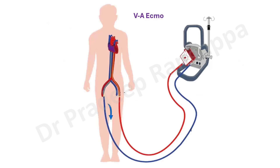For all our ICU trainees and DRNB trainees, it's good to have clarity on this. When we talk about VA ECMO, blood is drawn from the venous circulation, passed through the ECMO pump, and returned retrograde through the femoral artery cannula into the femoral artery and into the aorta. This is the typical flow mechanics in VA ECMO.